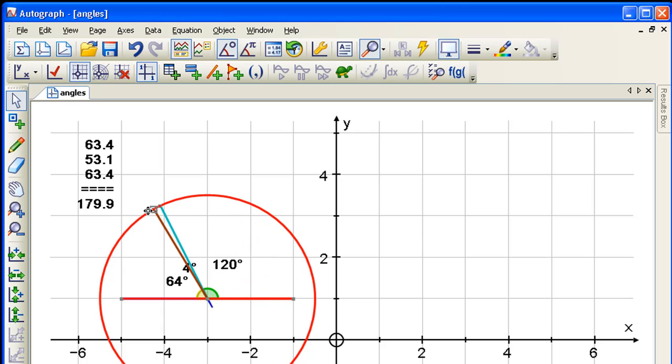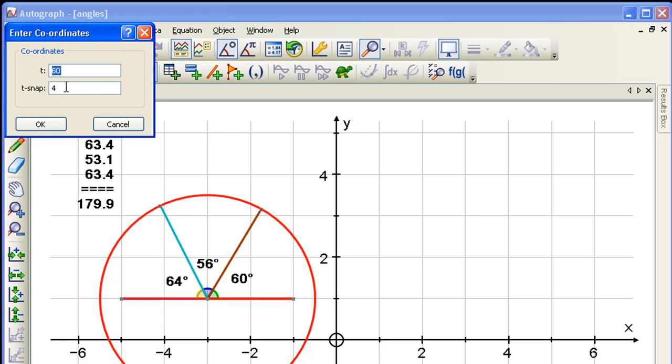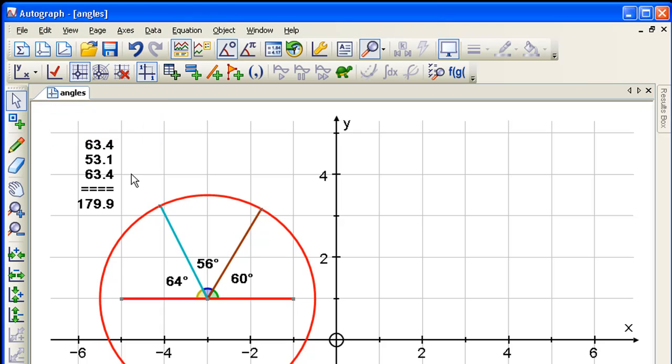Now we've got points that are going around a circle, but how are they going around? They seem to be jumping along. Well, if we double-click on this, they're going in fours. If we change that to a one, and double-click on this one and change this to a one as well, we now have complete control and they're going around in ones.